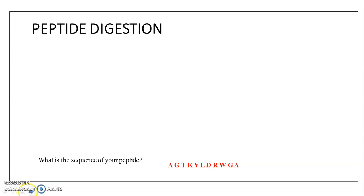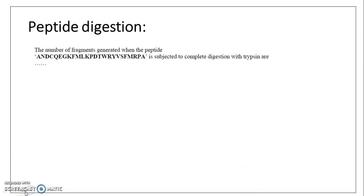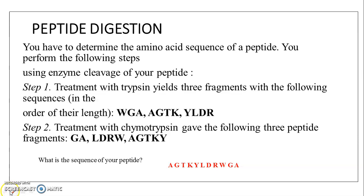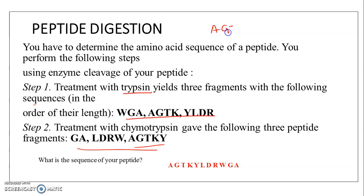The next question: you have to determine the amino acid sequence of a peptide by performing enzyme cleavage. Step one — treatment with trypsin yields fragments of the following sequences. You have to arrange the common overlapping regions. So you write: A, G, T, K — then the next fragment starting with T: A, G, T, K, Y — and then Y, L, D, R.